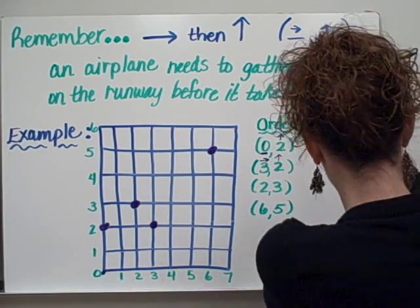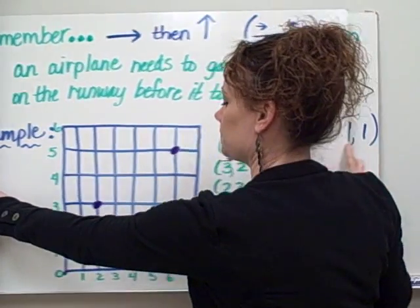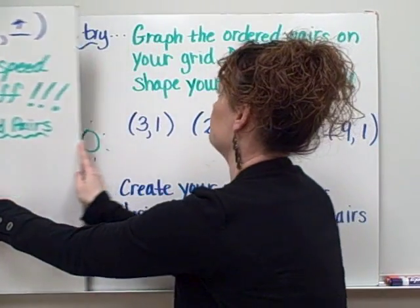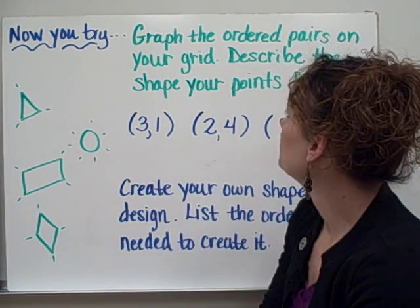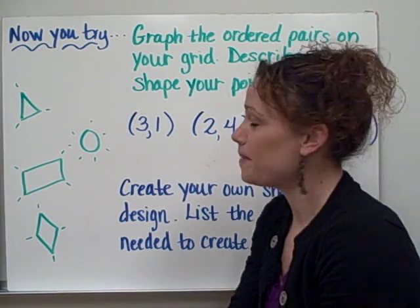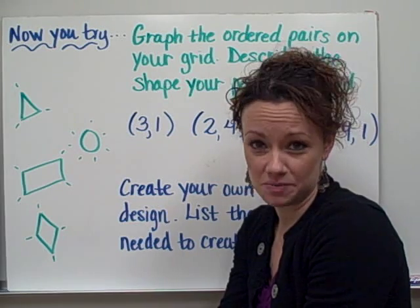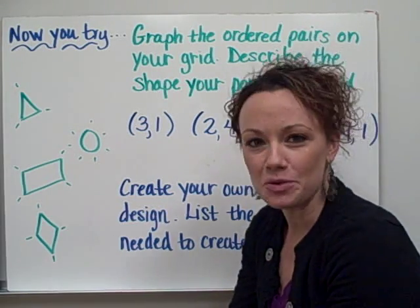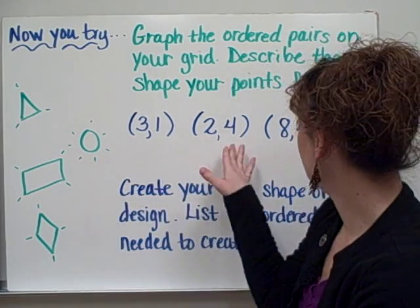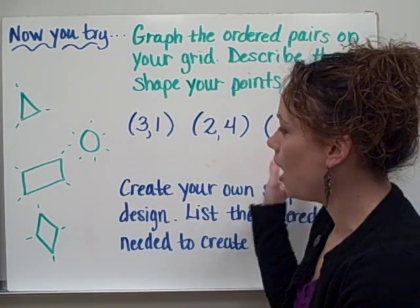All right, let's give you some examples to try on your own. On your homework sheet, I would like you to graph the ordered pairs. And I've given you a piece of grid paper to use for this evening's homework as well. So please create and label your grid and graph the following points on your graph.